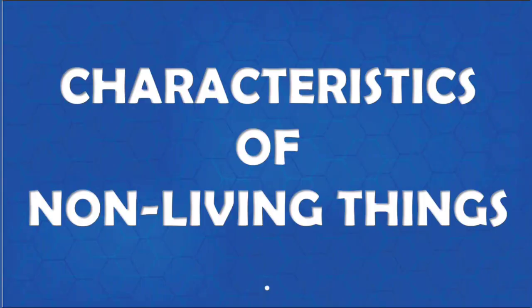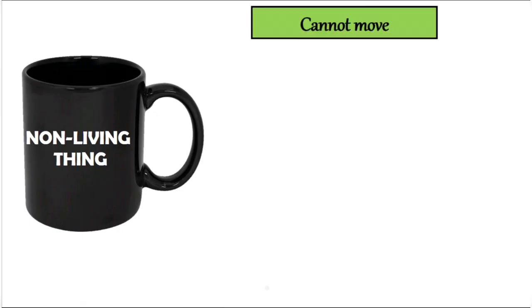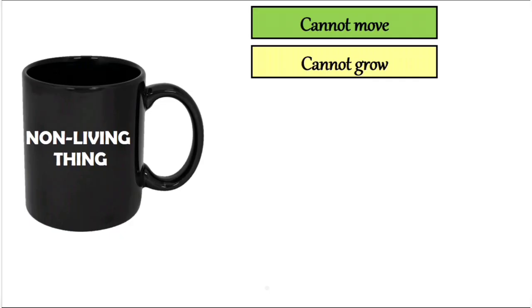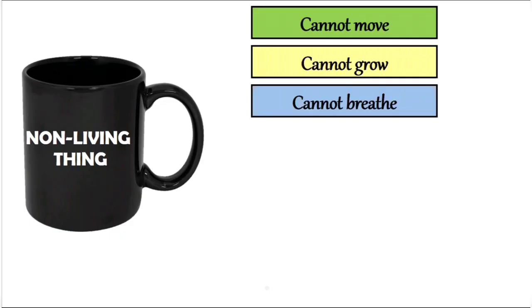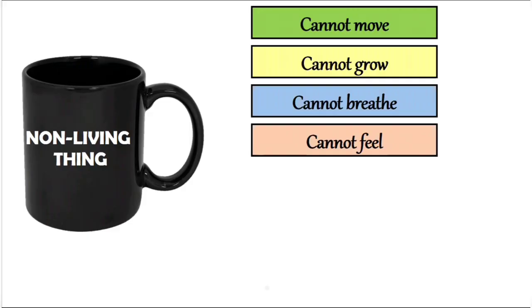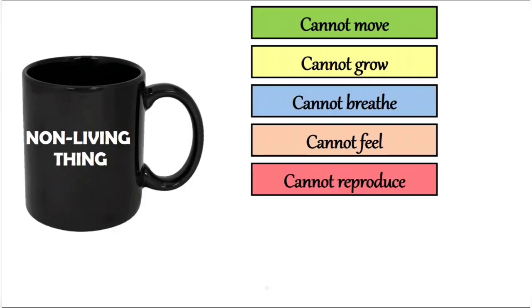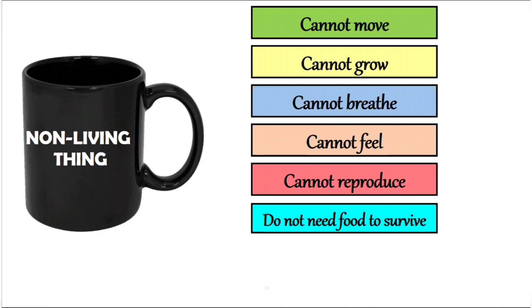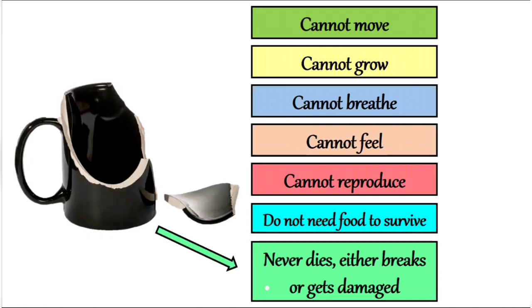Now let us focus on the characteristics of non-living things. Children, look at this image — it's a mug, and it's a non-living thing. Non-living things cannot move, cannot grow, cannot breathe, cannot feel, and cannot reproduce. They do not need food to survive. They never die; they either break or get damaged.